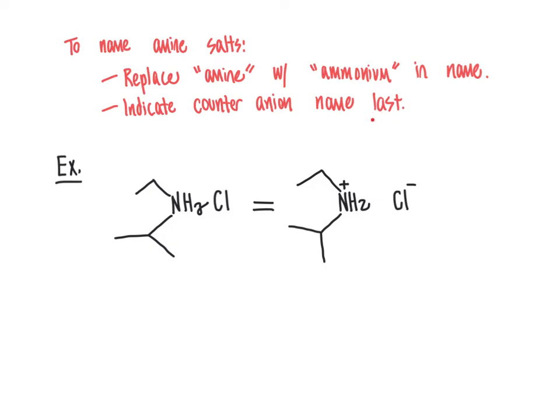In naming this structure, we indicate the counter anion name as the last part of the name. I'm going to fill that in as chloride, because chlorine becomes chloride when it has a negative formal charge. To determine the name of our ammonium cation, we think about what the name would have been for the amine that was the starting material for creating this protonated product.